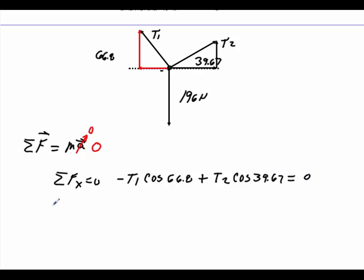We do the same thing for the summation of forces in the y direction. We set that equal to zero. I'm letting anything go up be positive, and it goes down negative. I can put in my negative 196 from here going down plus T1 sine 66.8 plus T2 sine 39.67. That's all equal to zero.